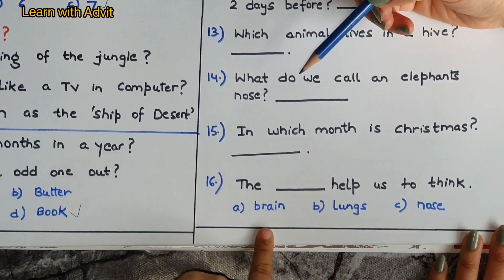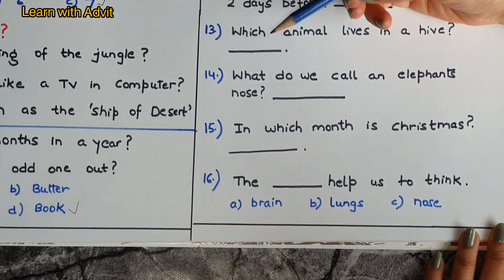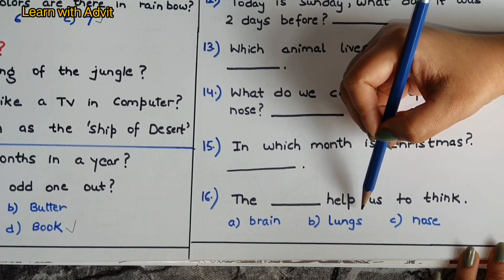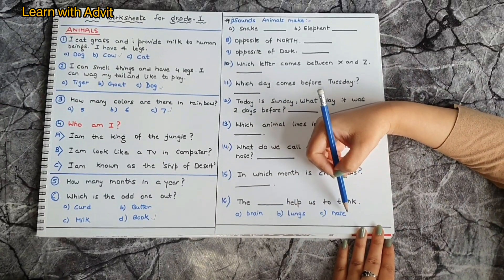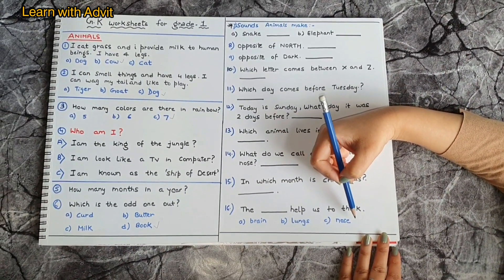The blank helps us to think: brain, lungs, or nose? Which organ? Brain, very good. Lungs help us to breathe, nose helps us to smell.